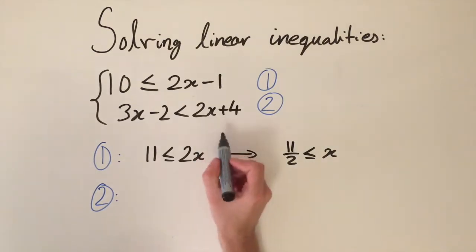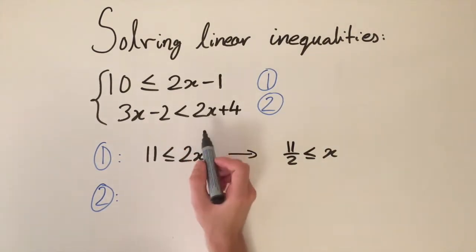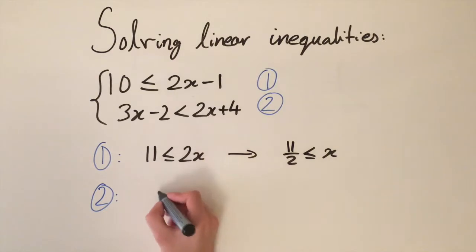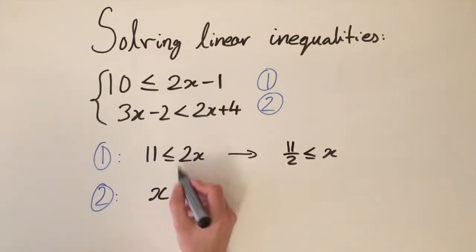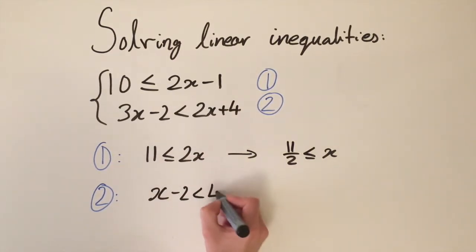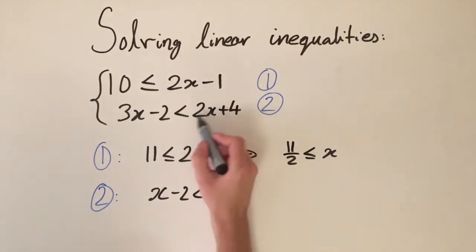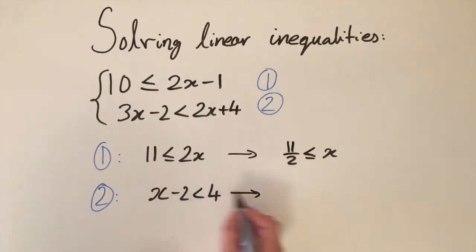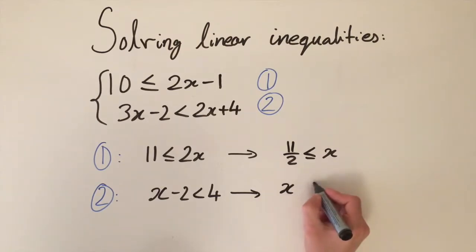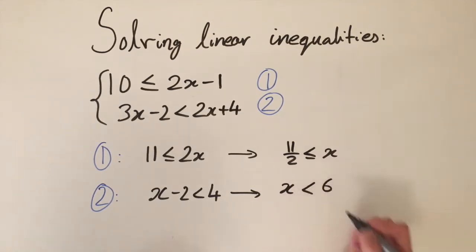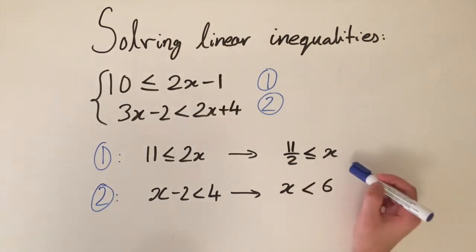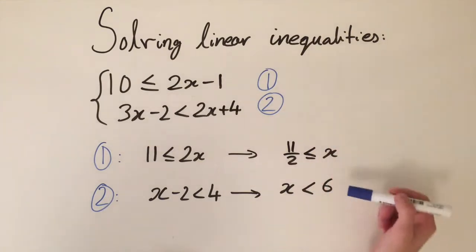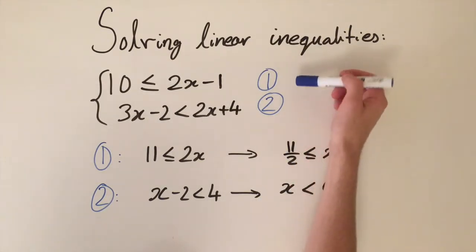For inequality 2, we subtract 2x from both sides to get x minus 2 is less than 4, then add 2 to both sides to get x is less than 6. So we've now worked out the solutions to each inequality individually.